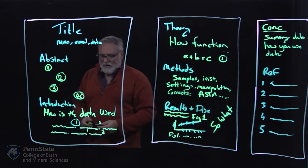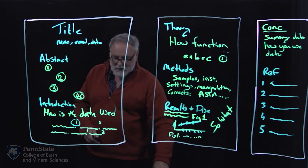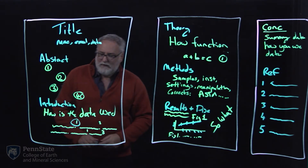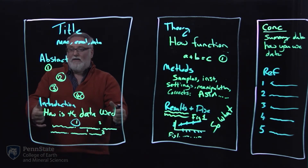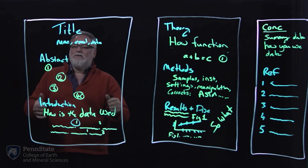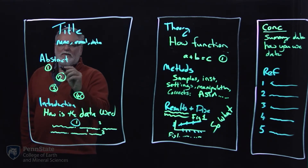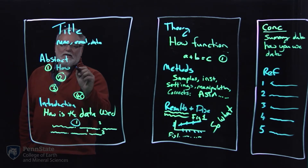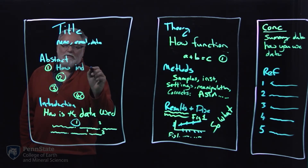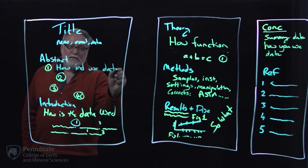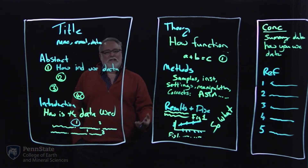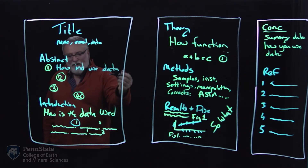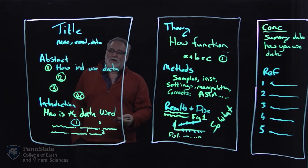So the abstract — I said it had four different things in it. The first is how the data is used. In the introduction, it's really going to be a paragraph on how that data is used; in the abstract, it gets distilled down to a couple of lines. How does industry use the data? The audience is somebody technical — the boss's boss. No need to dumb it down. Get right into how the data is being utilized — no other fluff.